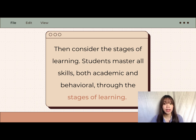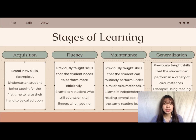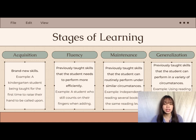After identifying the skill level in a student's repertoire, consider the four stages of learning. Achievement is greatest when there is a good match between instructional strategies and the student's current stage. The first stage is acquisition — brand new skills, such as a kindergarten student being taught for the first time to raise their hand. The student has begun to learn the target skill but is not yet accurate or fluent. The goal in this stage is to improve accuracy.